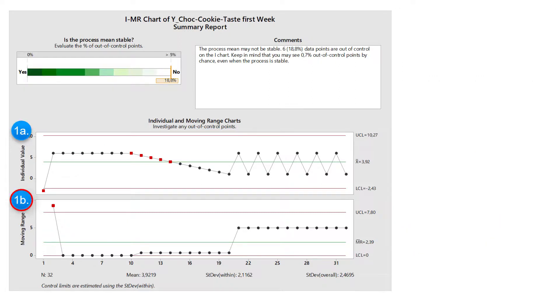In the moving range chart, the differences of adjacent values are mapped. Here the data points indicate the variation between values. The first data point corresponds to the difference of the second and the first value. The second data point refers to the difference of the third and the second value, and so on.